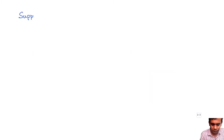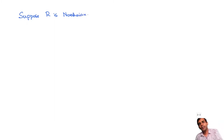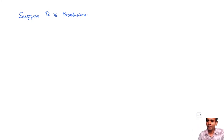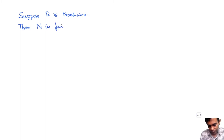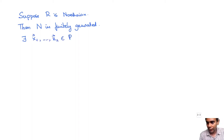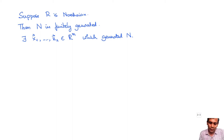Now let us try to understand better this submodule N. Suppose R is Noetherian. Then we have seen that every submodule of a finitely generated R-module is going to be finitely generated. And so that means N is finitely generated — there exist vectors x1, x2, ..., xn in R^m which generate N, for some integer n.